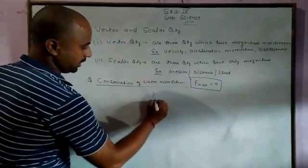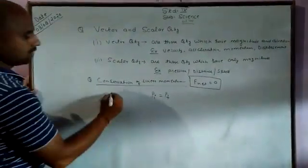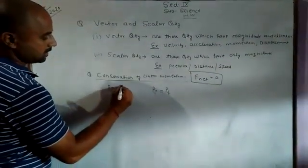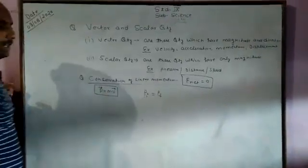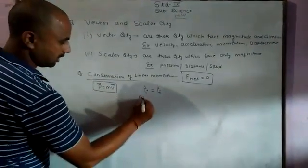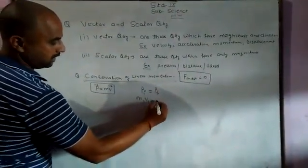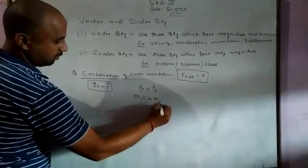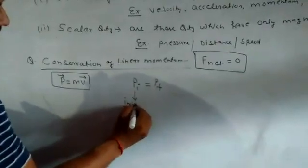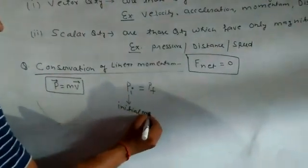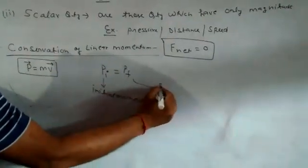It means initial linear momentum equals final linear momentum. The basic formula for linear momentum is mass times velocity. M1 times V1 is the initial momentum, and the final momentum is M2 times V2.